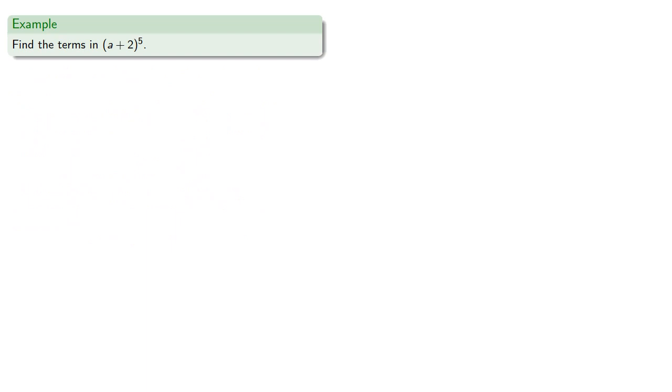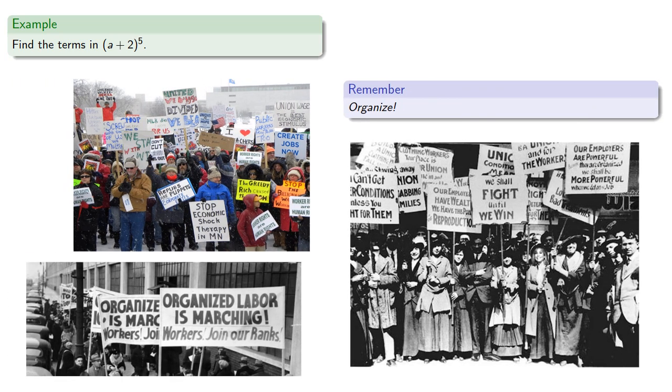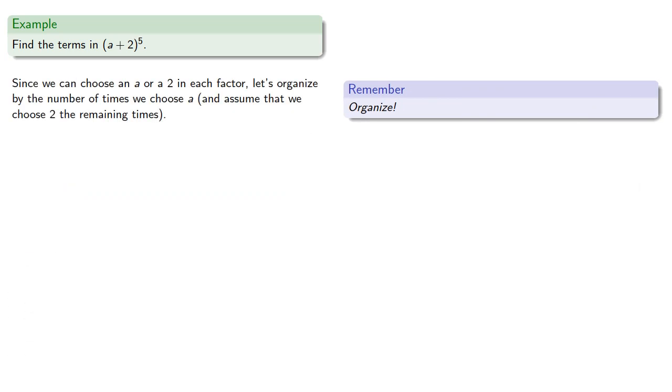So we can find the terms in (a+2)⁵. A key strategy: organize. Since we can choose an a or a 2 in each factor, let's organize by the number of times we choose a and assume we choose 2 the remaining times.